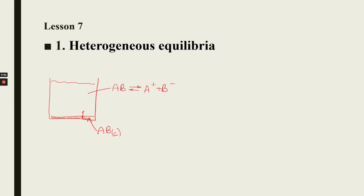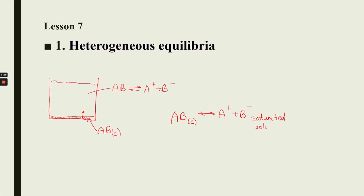There is equilibrium between these two phases — the salt is forming and dissolving at the same time. To write that equilibrium we write AB crystalline, two arrows because there is equilibrium, and in solution there are cations and anions. We always have to write 'saturated solution' here. This is the right way of writing heterogeneous equilibrium.